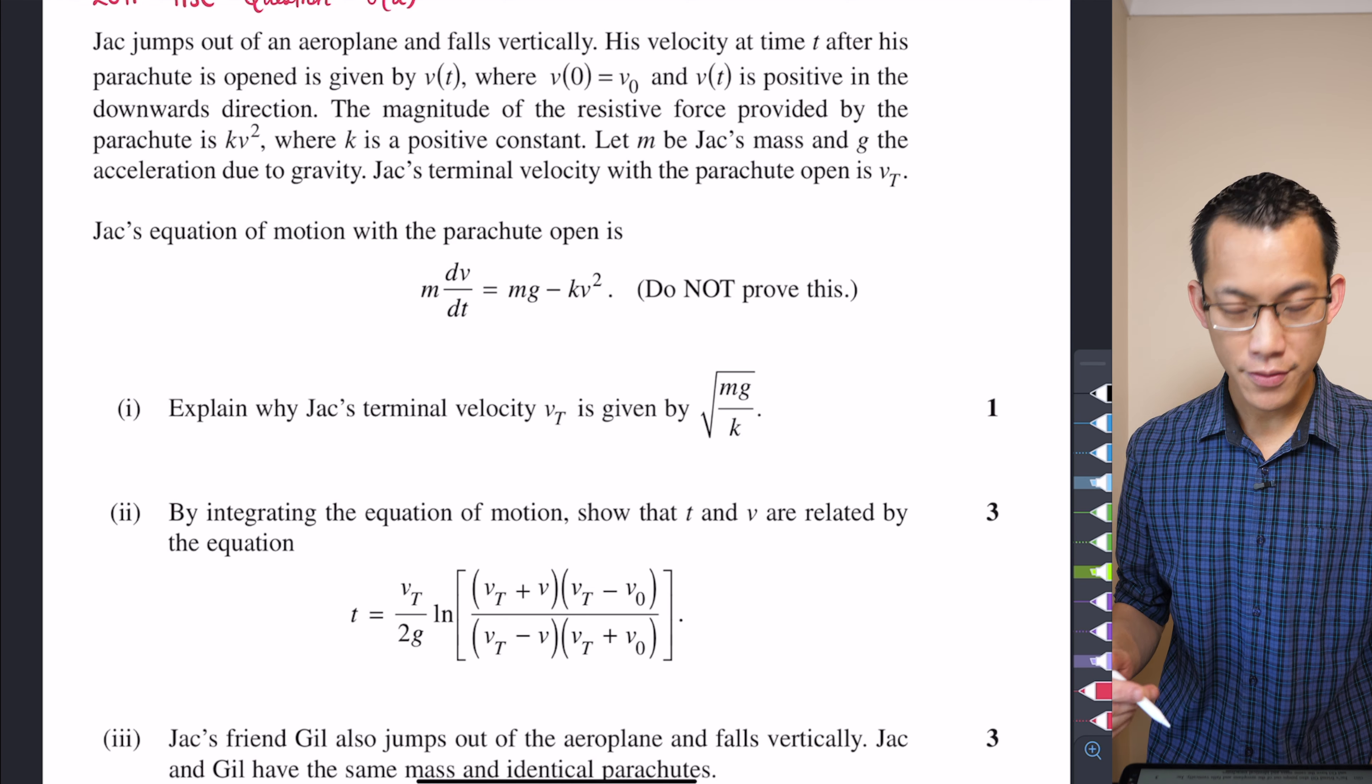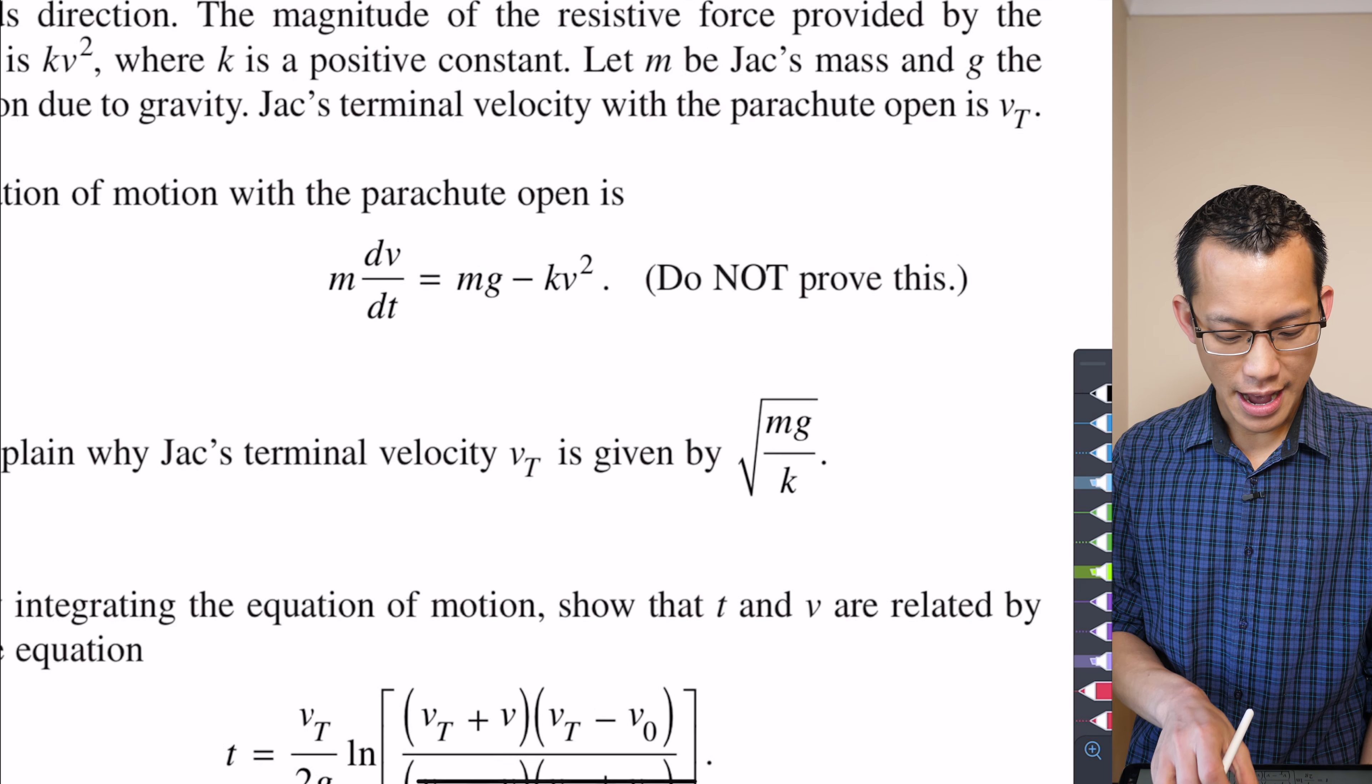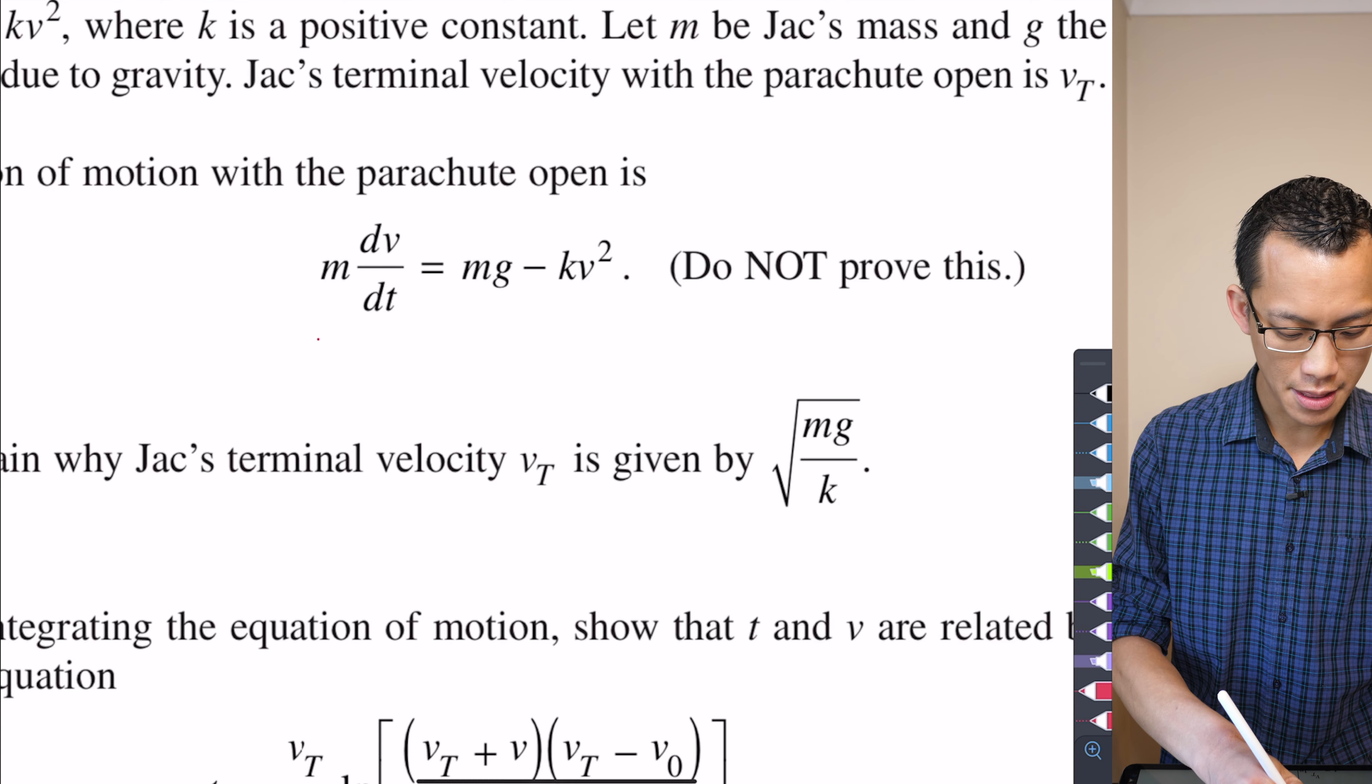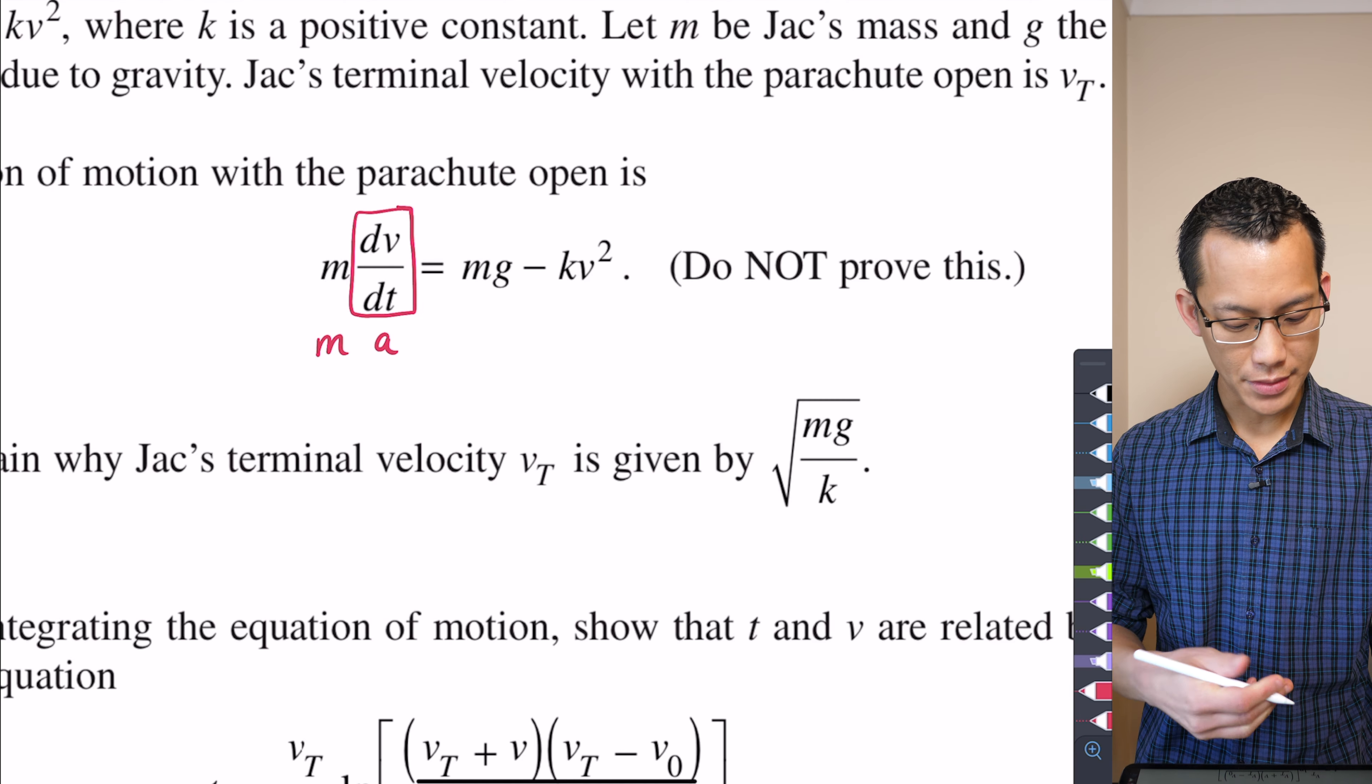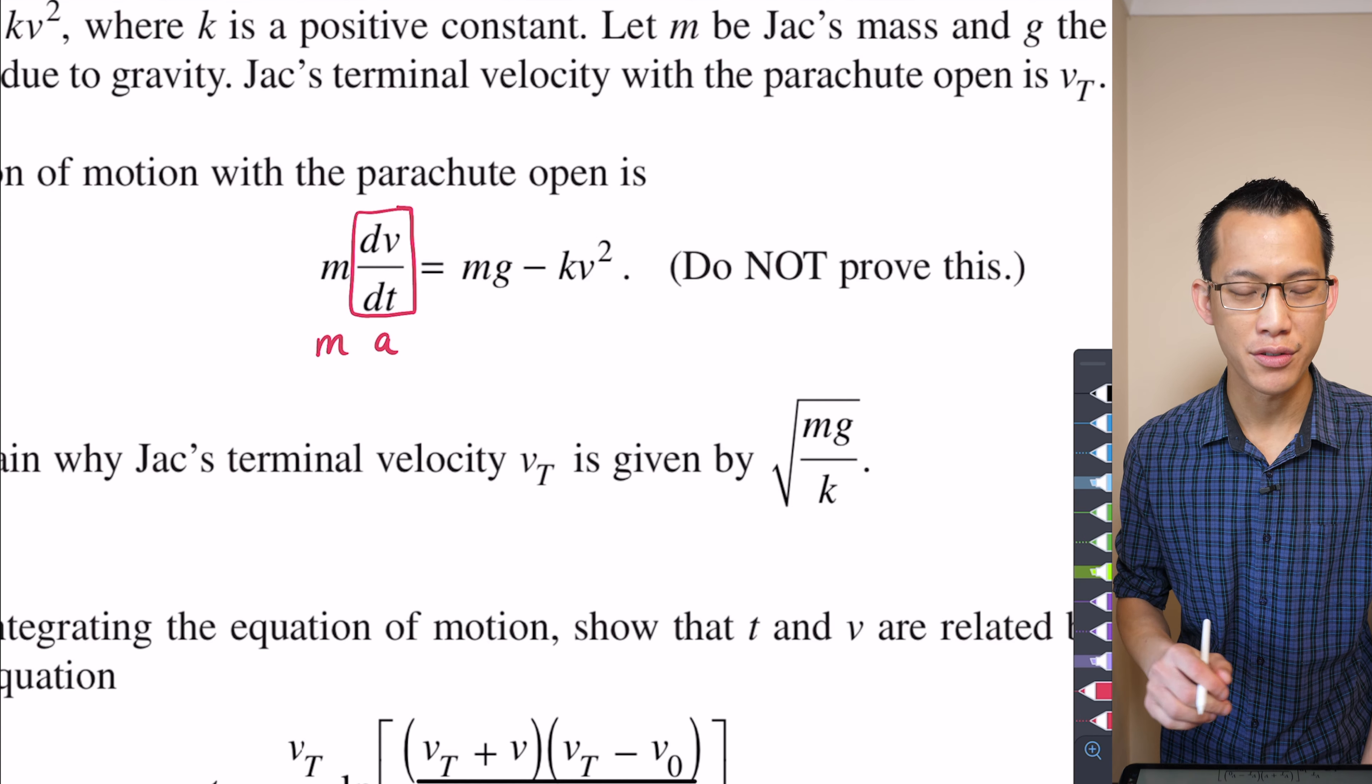Though I should point out, even though they've said don't prove it, it's not that big a deal. Can you see where it's come from? Force equals mass times acceleration. And you can see it right there in the left-hand side. There's mass times acceleration. This is just one of the classic forms for acceleration alongside x double dot, d half v squared on dx, etc.